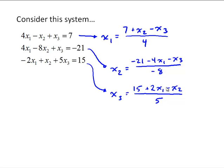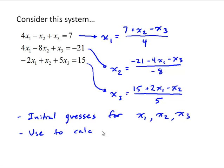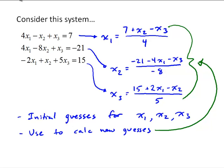The basic idea here is start with initial guesses. We'll start with initial guesses for x1, x2, and x3. Use those to calculate new guesses using these three equations. And then keep iterating that, doing it over and over again until we have convergence, similar to what we did for root problems.